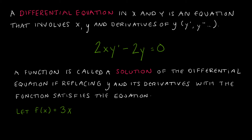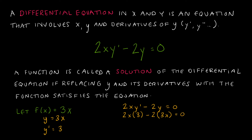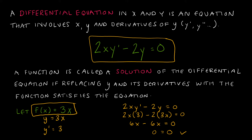For instance, if f of x equals 3x, then y equals 3x and y prime is the derivative of 3x, which is just 3. So I take my equation 2xy prime minus 2y equals 0 and replace y prime with 3 and y with 3x. So 2 times x times 3 minus 2 times 3x equals 0: 6x minus 6x is 0, and 0 equals 0. Therefore, f of x equals 3x is a solution to the differential equation 2xy prime minus 2y equals 0.